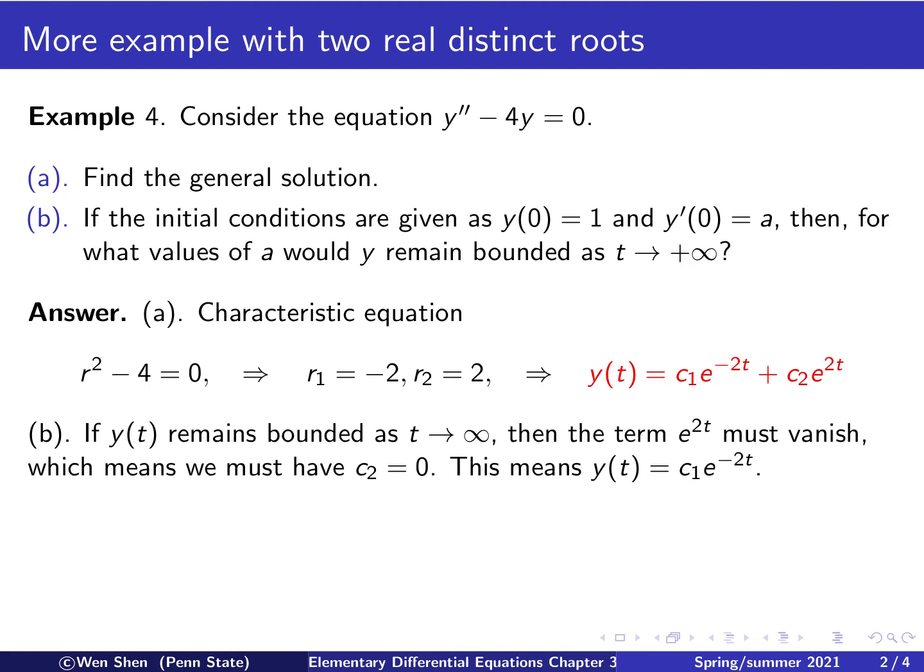So there are various ways of dealing with part B. Let me present one way. So, the question asks you to find a possible initial condition for y prime at 0, such that the solution in the end will remain bounded. So, y as a function t remains bounded as t goes to infinity. Then let's look at the general solution. In general, if both of these terms are present, this term goes to 0, and this term goes to infinity, and this will not hold. And if you want yt to be bounded as time goes to infinity, then this term must not be there. And therefore, c2 must be 0.